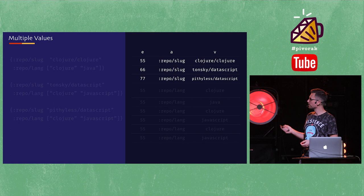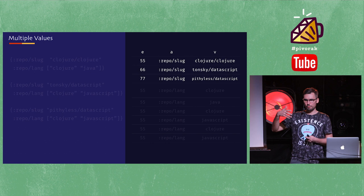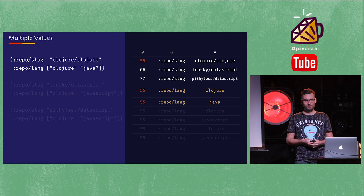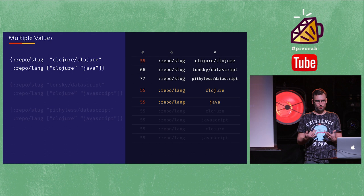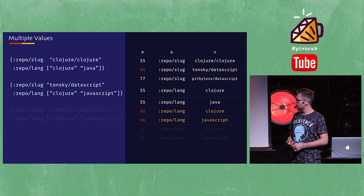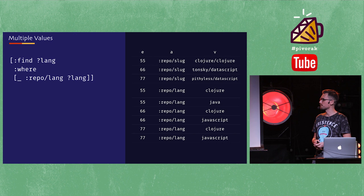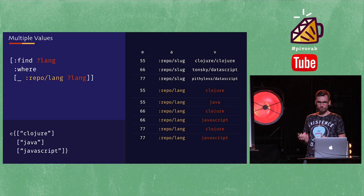What about multiple values? We have this simple EAV data structure — what if there are multiple values for an attribute? I never said a single entity can have a single attribute only once. If there are multiple values that are true for an entity, just repeat yourself. For example, a feature was written in Ruby and JavaScript. Similarly, data-script is written in Clojure and JavaScript. Now we can make queries like: just give me all the languages — six values, but only three results because of sets. Or: what repositories are written in which languages — a table scan of repos to languages.